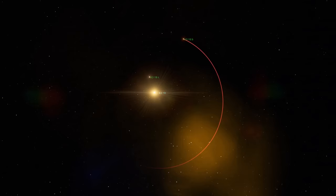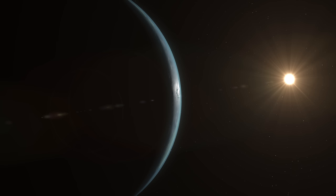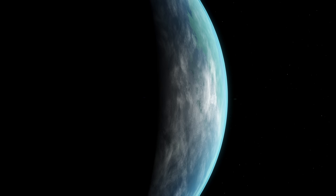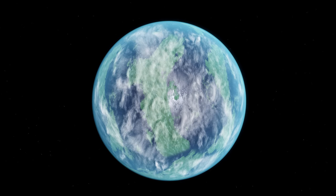K2-18b orbits around its parent star, K2-18, in just this zone. But what sets it apart from other exoplanets in similar orbits? K2-18b is not just another rocky planet. It is what scientists call a Hyacian world.